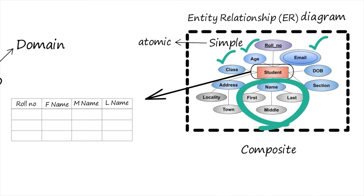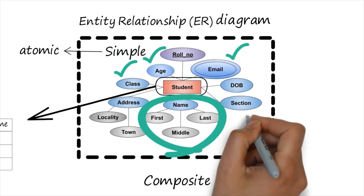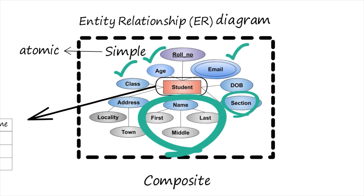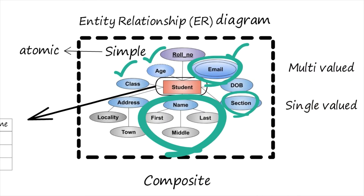A Single-Valued Attribute has only one value. For example, the section of a student is a single-valued attribute because a student cannot study in more than one section. In contrast, in the ER diagram, attributes written in a double oval are known as Multi-Valued Attributes — for instance, a student may have more than one email ID or more than one phone number. These are classical examples of multi-valued attributes.